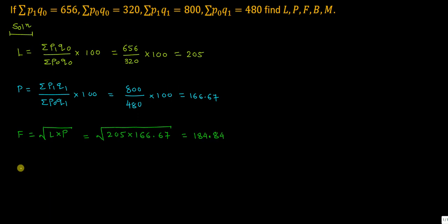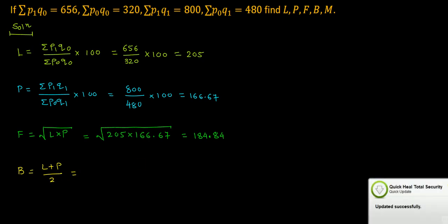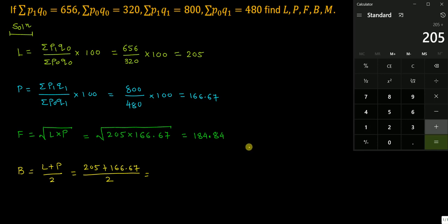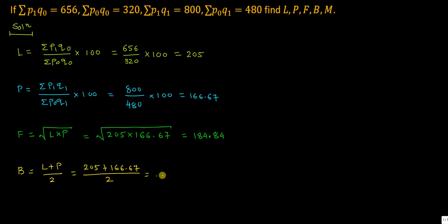Now find Bowley's index number. B equals L plus P upon 2, the arithmetic mean. So L plus P equals 205 plus 166.67 divided by 2, which gives 185.84.